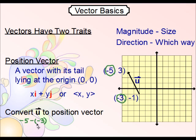So that's negative 5 minus negative 3, and then it's 3 minus negative 1.